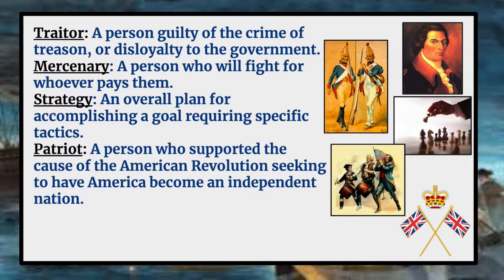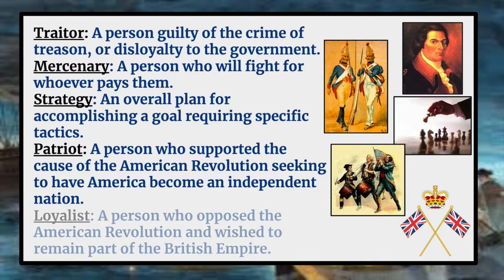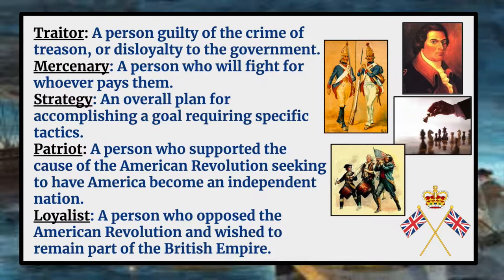Our next term is patriot. A patriot is a person who supported the cause of the American Revolution and wanted America to become an independent nation — I think there's also a football team that may have that name. And then our final term is loyalist. A loyalist is a person who opposed the American Revolution, supported the king, and wished to remain part of the British Empire. And that is our review — we don't need to dwell upon it.